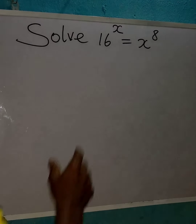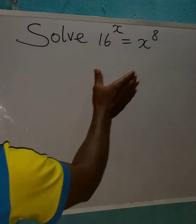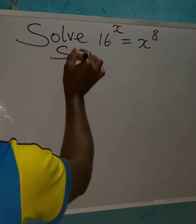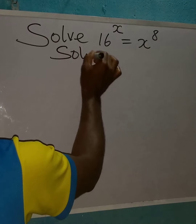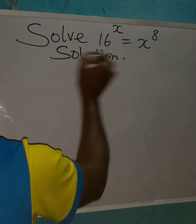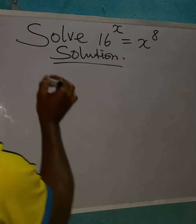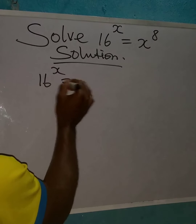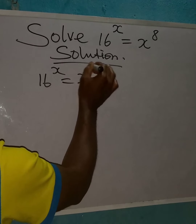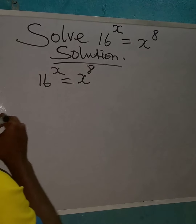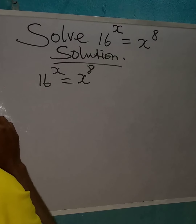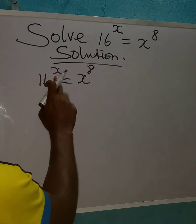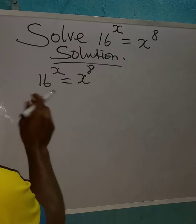Let's solve this problem quickly. The solution to the problem: we have 16 to the power x equal to x to the power of 8. The first thing we can try to do is to eliminate the power x from the left-hand side.